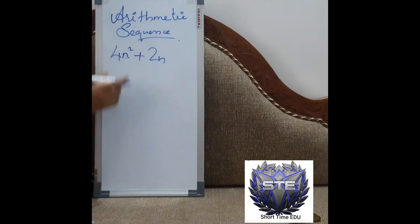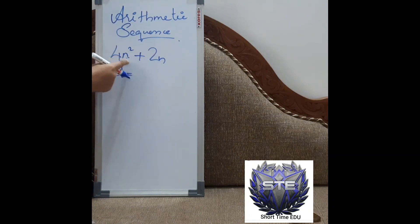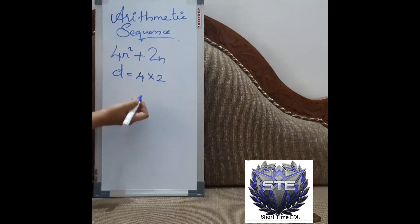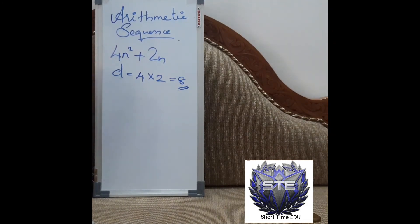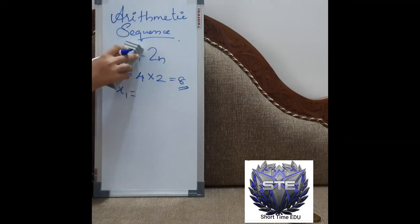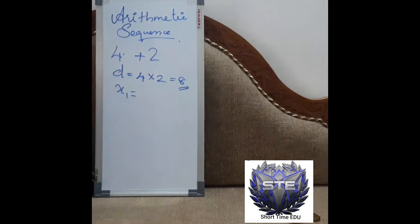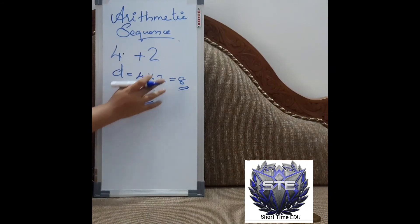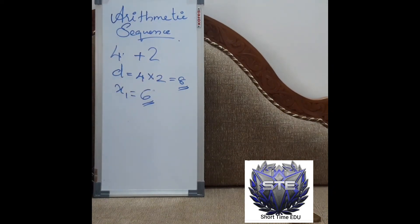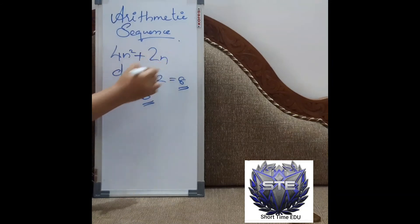For the expression 4n squared plus 2n, the common difference d is found by taking the coefficient of n squared and multiplying by 2. The coefficient of n squared here is 4, so d equals 4 times 2, which is 8. The common difference is 8. For the first term x1, we substitute n=1: 4 plus 2 equals 6. So x1 is 6.